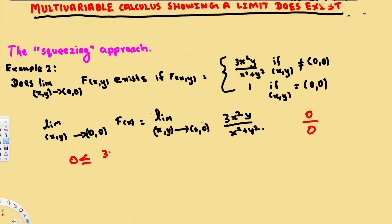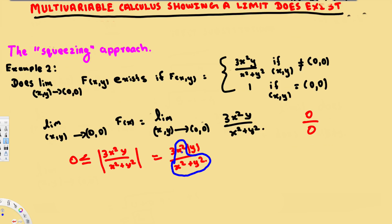To do the squeezing approach, we take 0 and place the expression |3x²y/(x²+y²)| in absolute value, which equals 3|x²y|/(x²+y²). Now look at the part x²/(x²+y²) — the top has x² and the bottom has x²+y². Since y² is always positive, this fraction is definitely less than 1. Therefore, this whole value should be less than 3|y|.